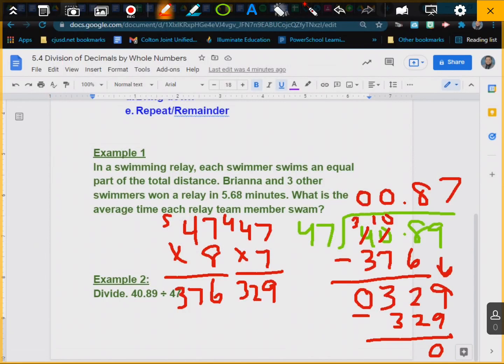0.87 is my final answer. And that's it, guys. That's how you do division when you divide a decimal with a whole number.